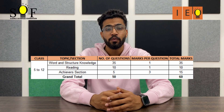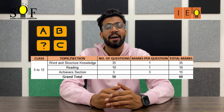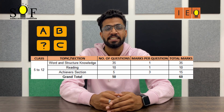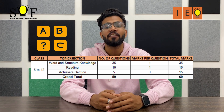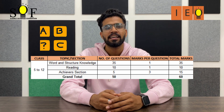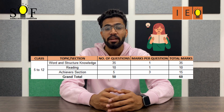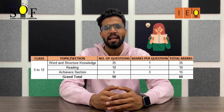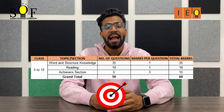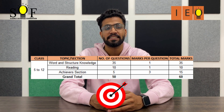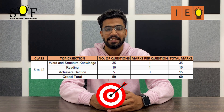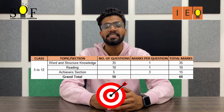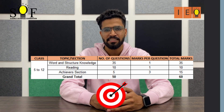For classes 5 to 12, Word and Structure Knowledge section will have 35 questions carrying 1 mark each, making this section a total of 35 marks. Reading section will have 10 questions carrying 1 mark each, totalling 10 marks. Achievers section will have 5 questions carrying 3 marks each, making this section a total of 15 marks.